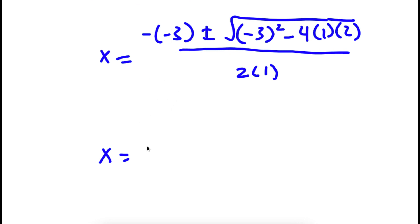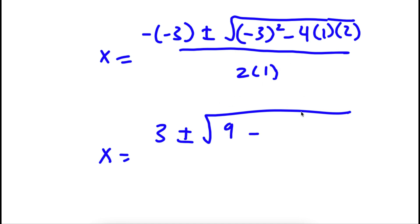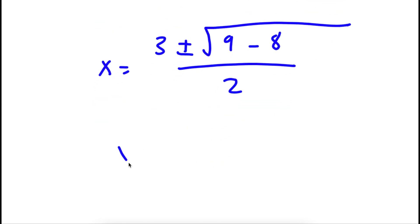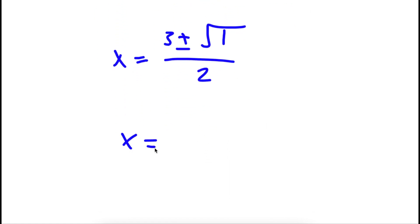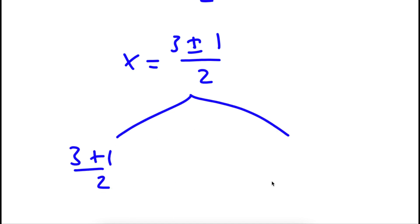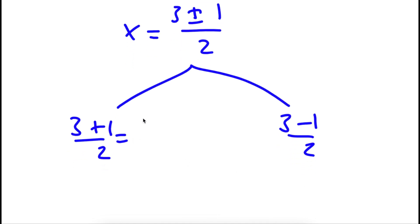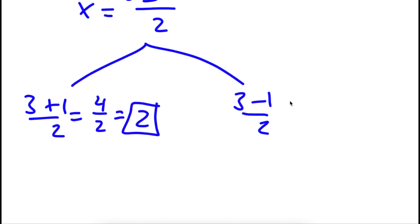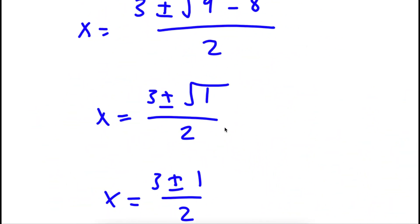Simplifying: negative of negative 3 is positive 3, plus or minus the square root of 9 minus 8, all over 2. That gives x equals 3 plus or minus the square root of 1, over 2, which is 3 plus or minus 1 over 2. This gives two equations: 3 plus 1 over 2 equals 4 over 2, which is 2; and 3 minus 1 over 2 equals 2 over 2, which is 1. So x equals 2 and x equals 1.